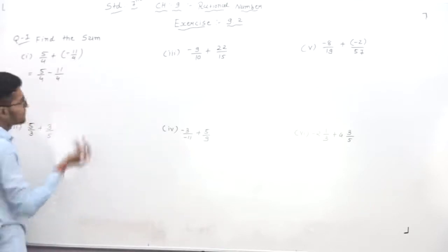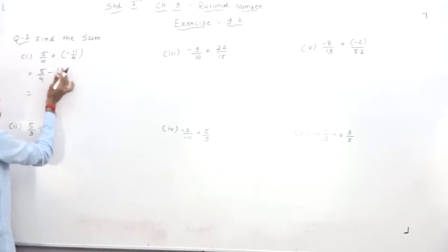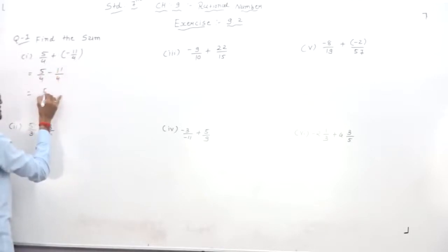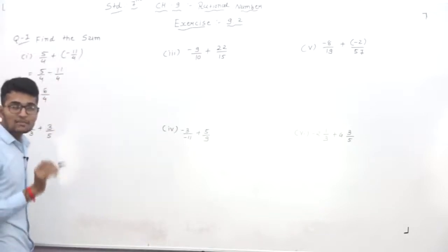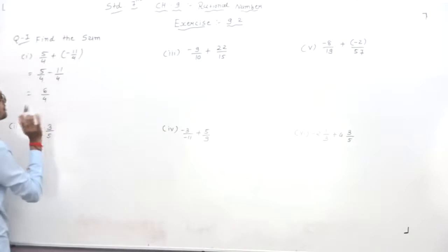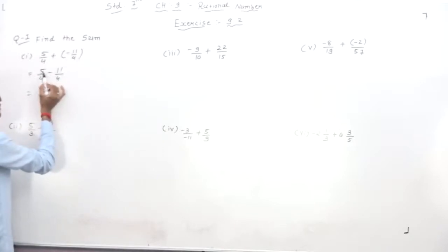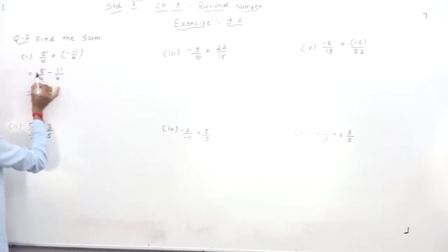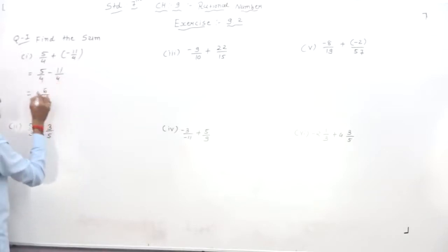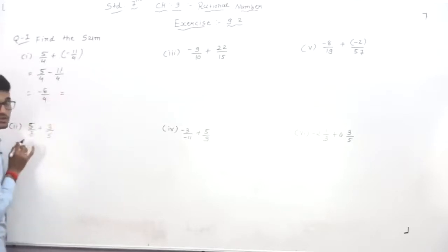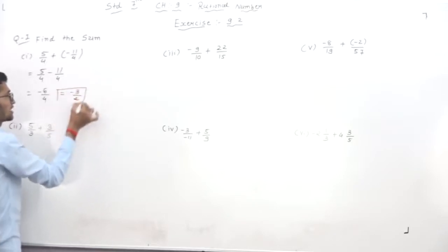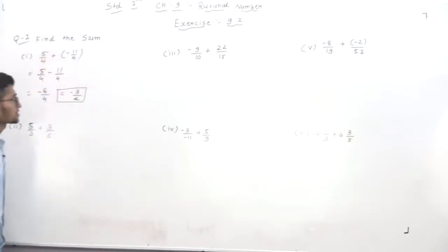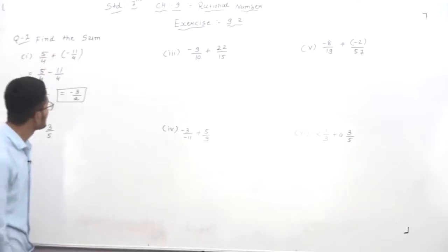So compute 5 minus 11. The difference is 6, but put the sign of the larger number. 11 is the larger number and its sign is negative, so the answer is minus 6/4. Simplifying, minus 6/4 equals minus 3/2. So the answer to the first question is minus 3/2.